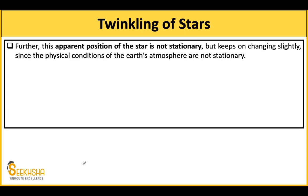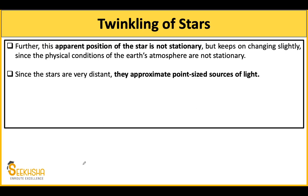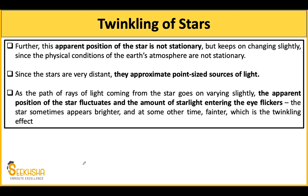This apparent position is not stationary — it continuously changes. Earth's atmosphere is continuously changing its physical conditions. There is also dust in the atmosphere. All these factors play a role in refraction. Because the apparent position keeps changing, the star appears to twinkle — sometimes it appears bright and sometimes dim. This is why we think the star is flickering and twinkling.